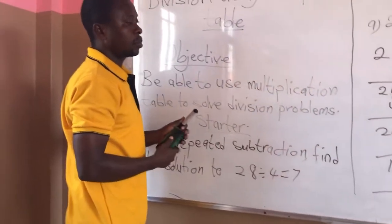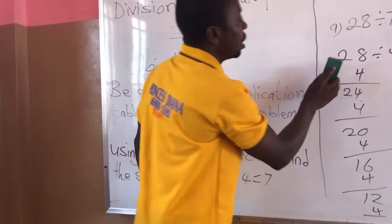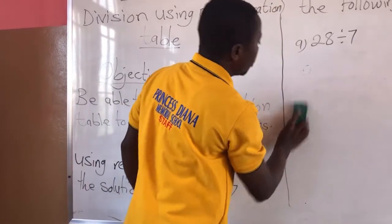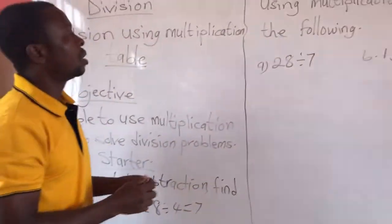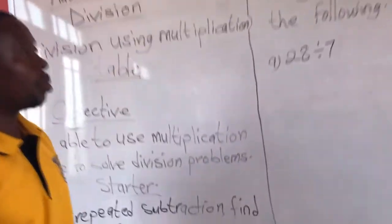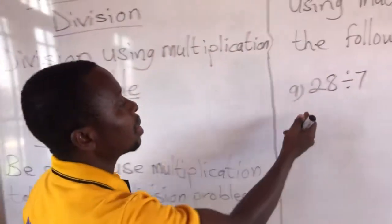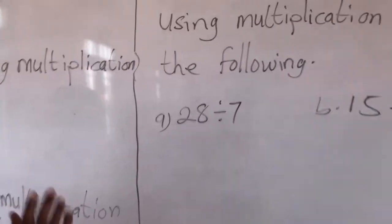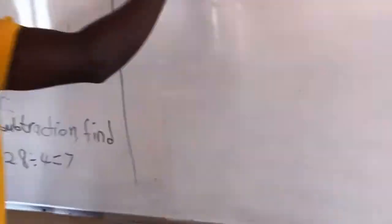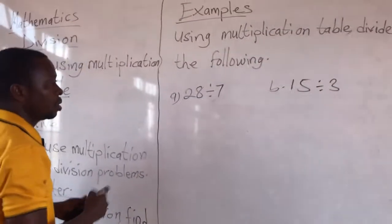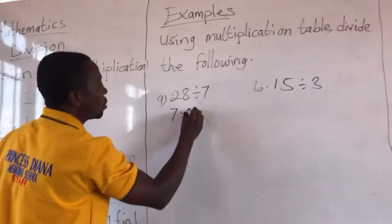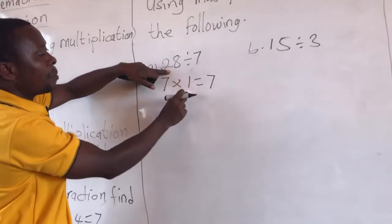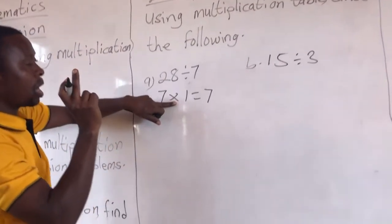I hope you understand. Let's proceed with today's lesson. Today we are looking at division using multiplication table. We have 28 divided by 7. We are using the 7 times table. So we have 7 times 1 is equal to 7, and we continue until we get 28.